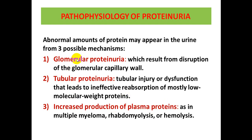Glomerular proteinuria results from a disruption in the glomerular capillary wall. Tubular proteinuria results from tubular injury or dysfunction leading to ineffective reabsorption of low molecular weight proteins. Increased production of plasma proteins occurs in conditions such as multiple myeloma, rhabdomyolysis, or hemolysis.